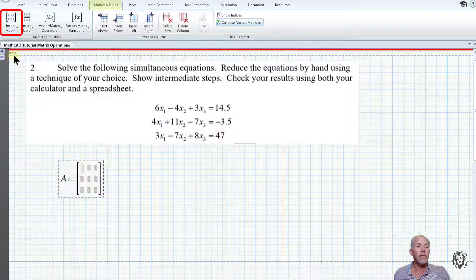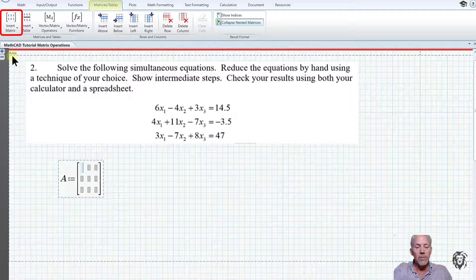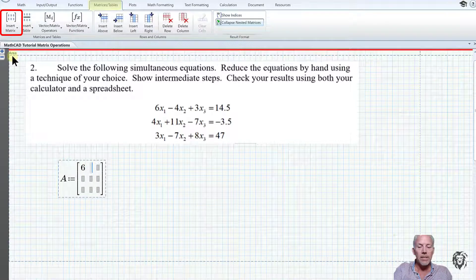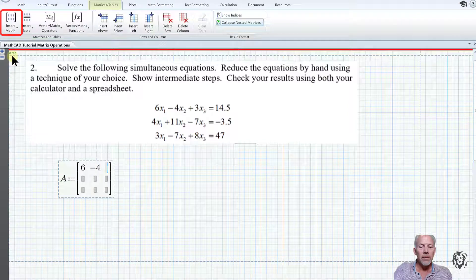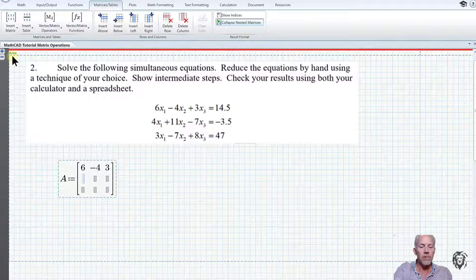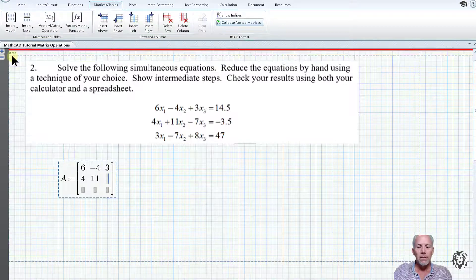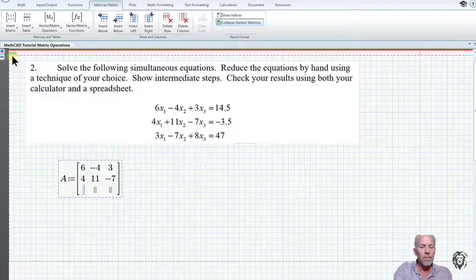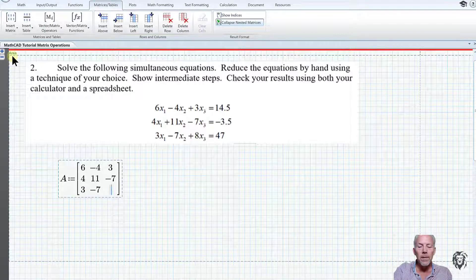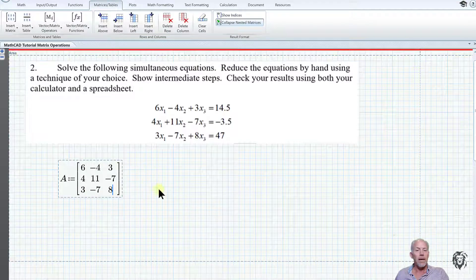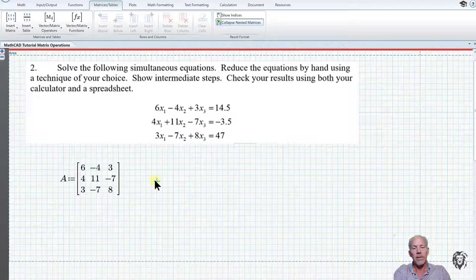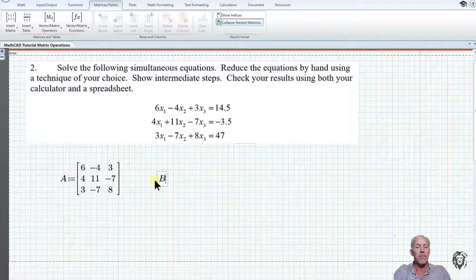We go up into matrix and tables, it's a three by three. Using the tab key, I'm reading them off the equations here: 6, -4, 3, and 4, 4, 11, -7, 3, -7, and 8.